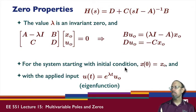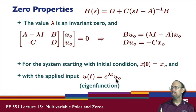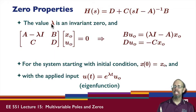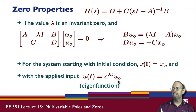So if our system starts at initial condition x0 and we apply this particular eigenfunction e to the lambda t — where lambda is not just any value but an invariant zero — notice we also have a direction u0. We're going to apply this to our system and see what happens.